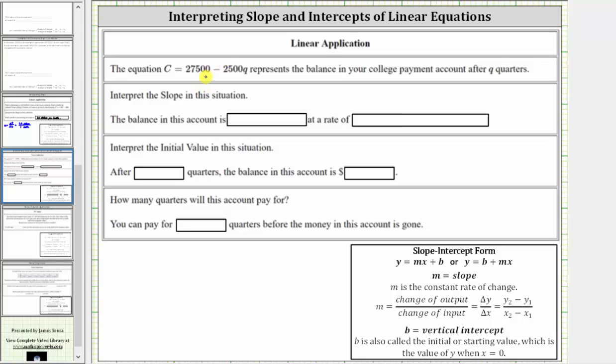The equation C equals 27,500 minus 2,500 Q represents the balance in your college payment account after Q quarters. For the first part, we're asked to interpret the slope in this situation.